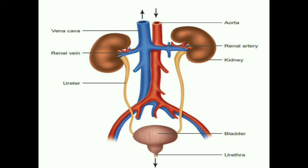Urine is stored in the urinary bladder until the pressure of the expanded bladder leads to the urge to pass it out. The bladder is muscular and is under nervous control, so we can usually control the urge to urinate.